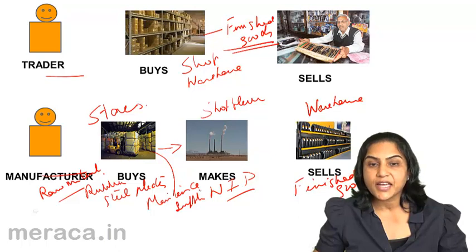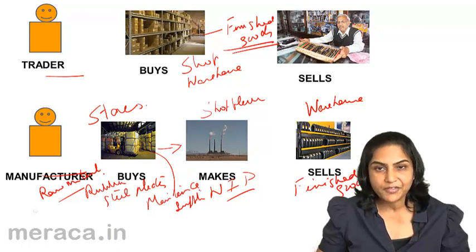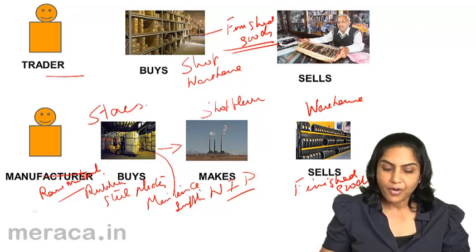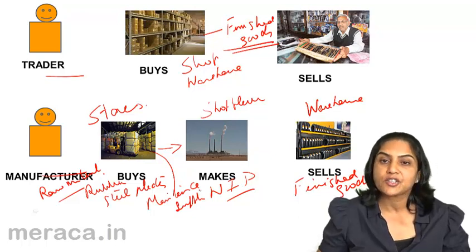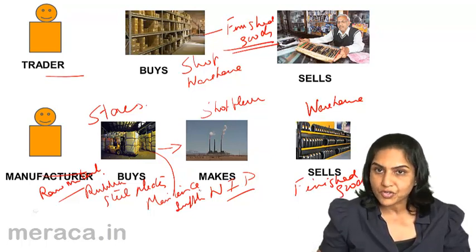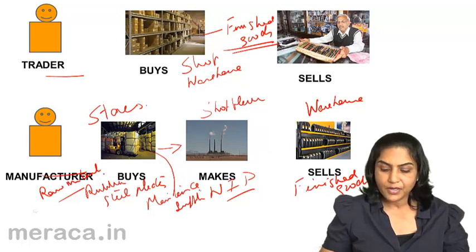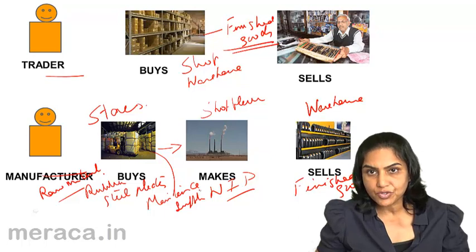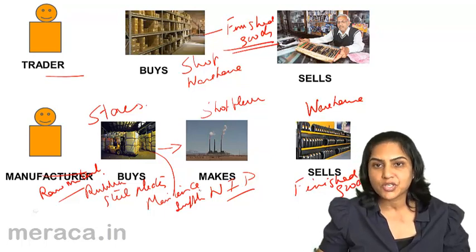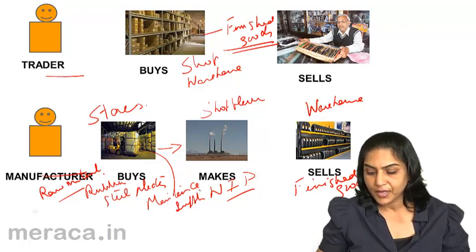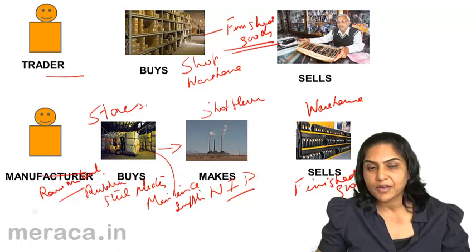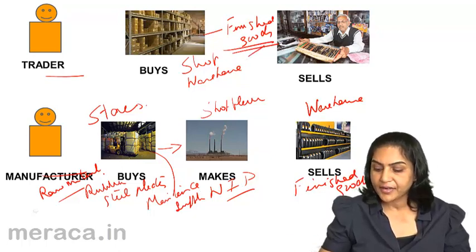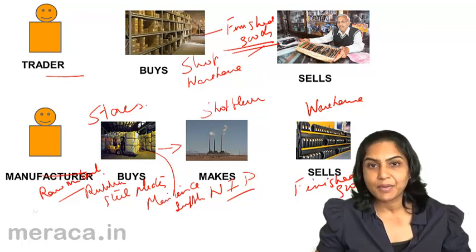Thus, the types of inventories that we have are: raw materials — materials which are required for the process of production; work in progress — partly finished goods in the process of production; and finished goods — which are in saleable condition.